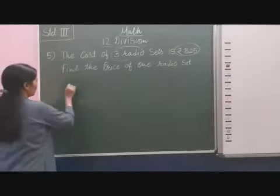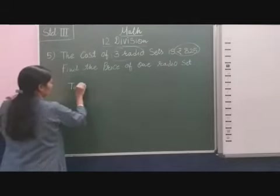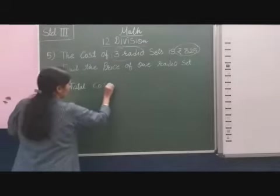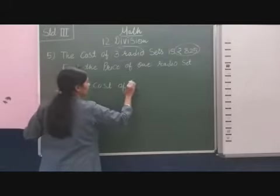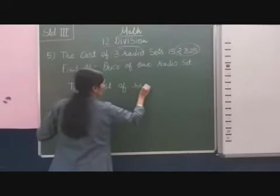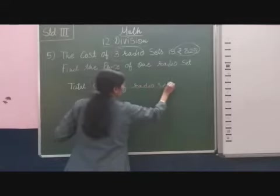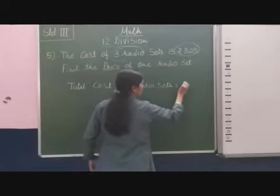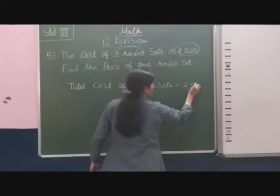So, total cost of radio set is equal to Rs. 825.